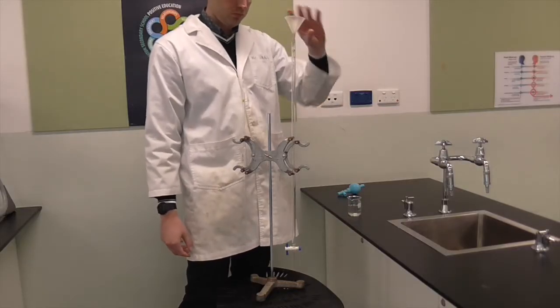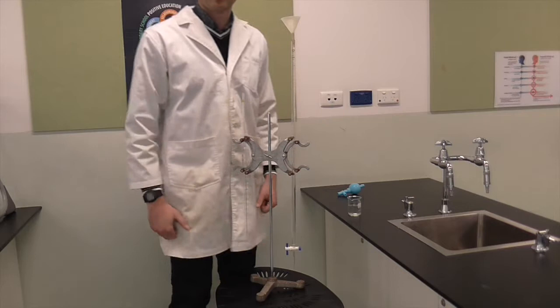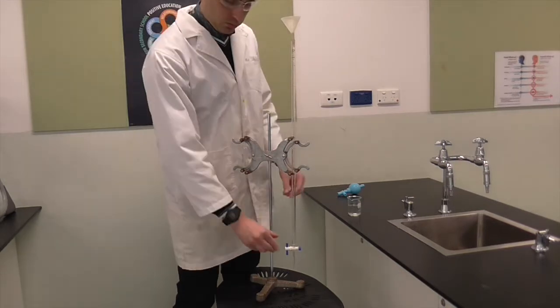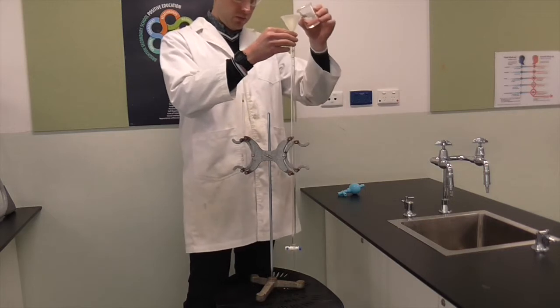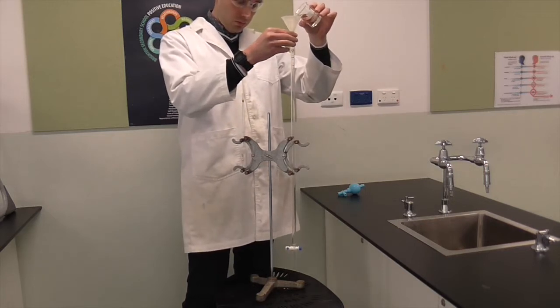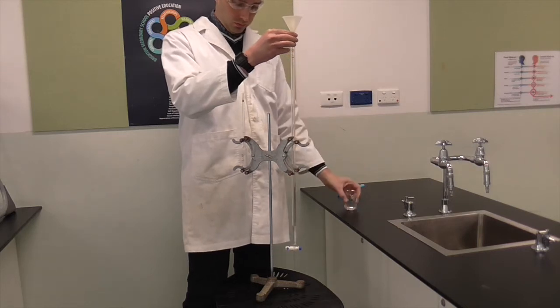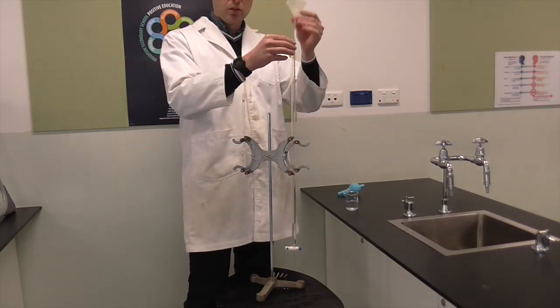Now we're going to fill up the burette. So we're going to rinse the burette. Place the funnel on top, make sure you close the stopcock down the bottom. Then we're going to fill. Hold the funnel slightly above the burette when you do this, otherwise you'll get an airlock. You want to add about 5 ml of water to your burette.